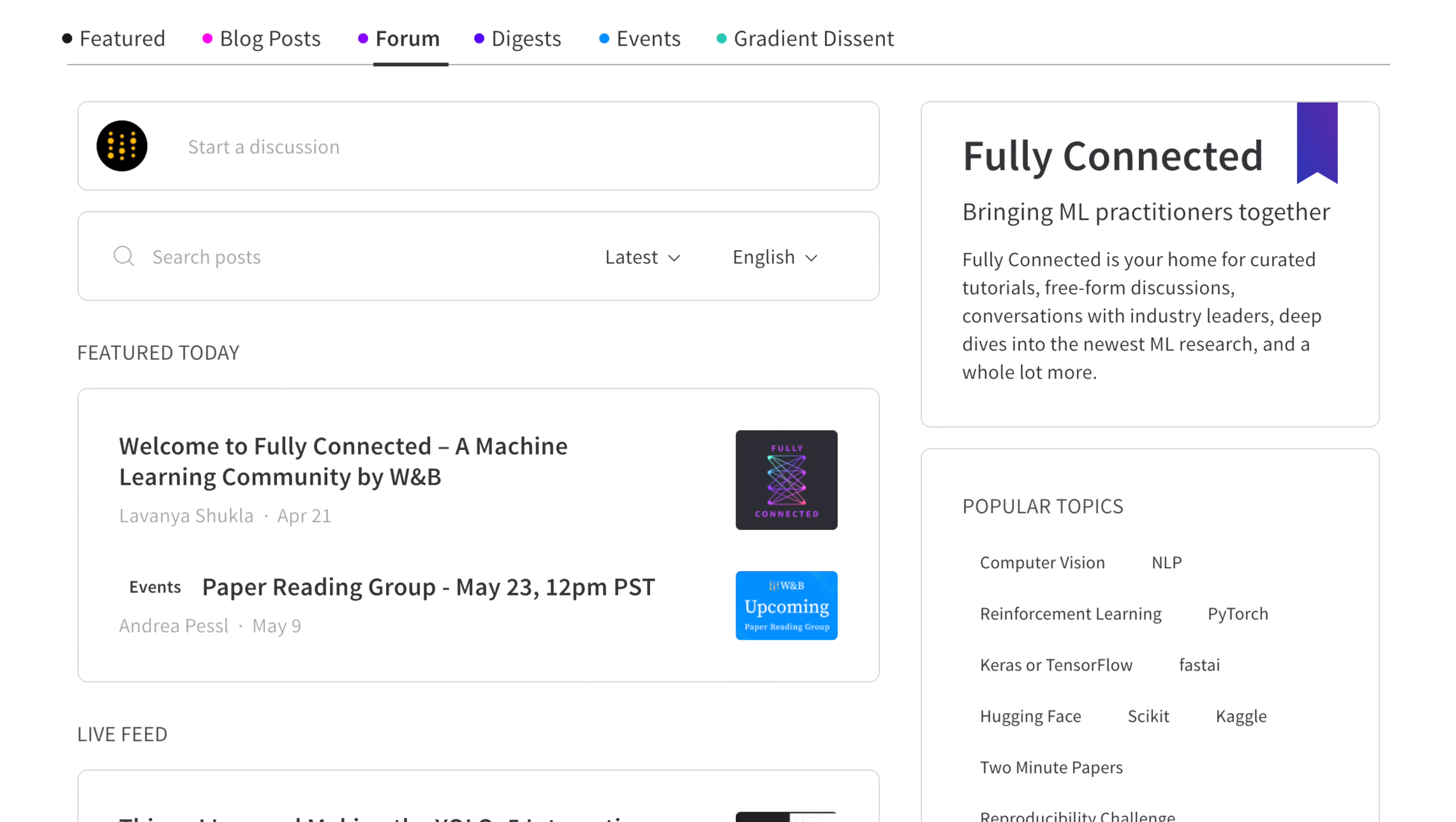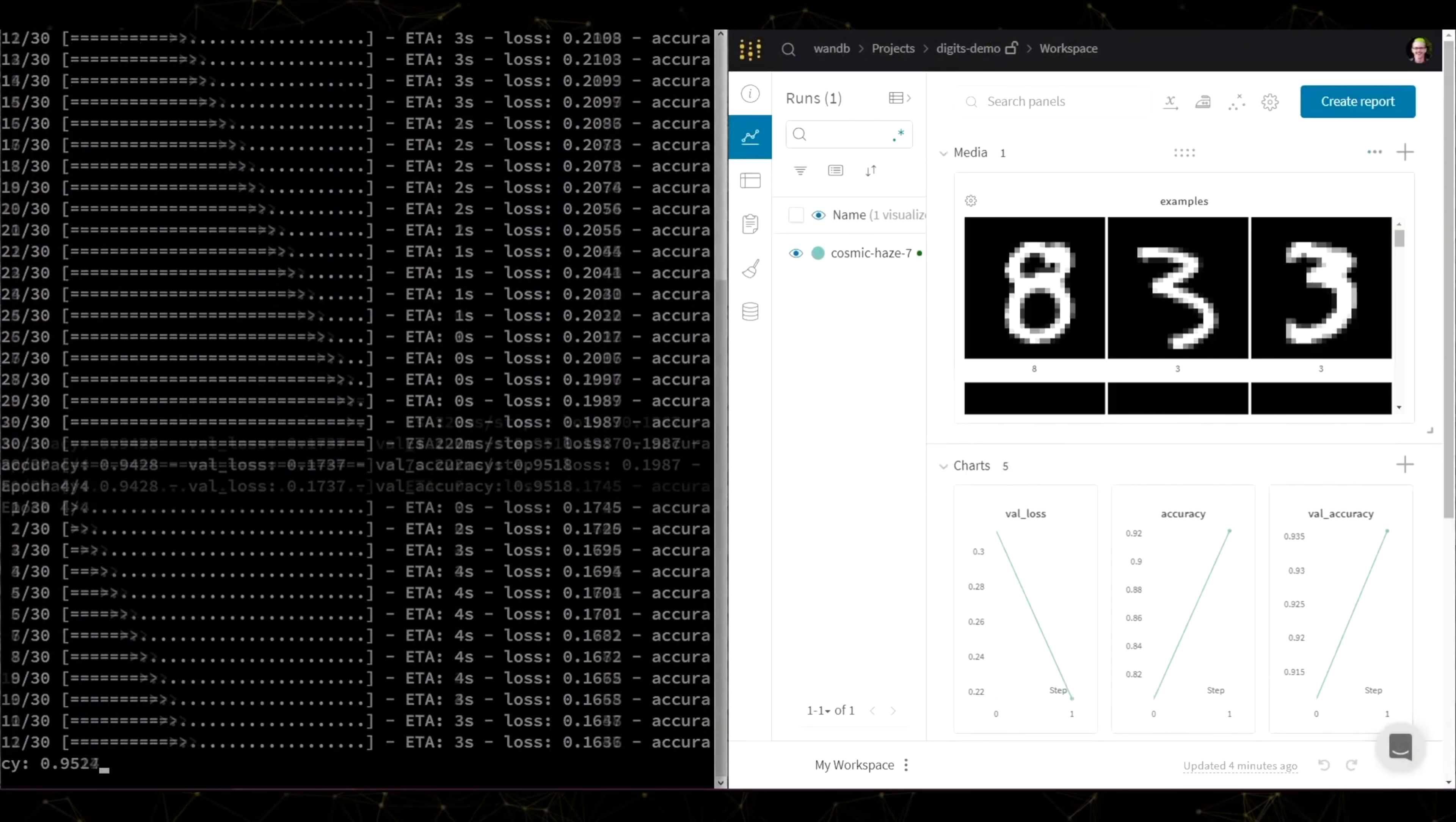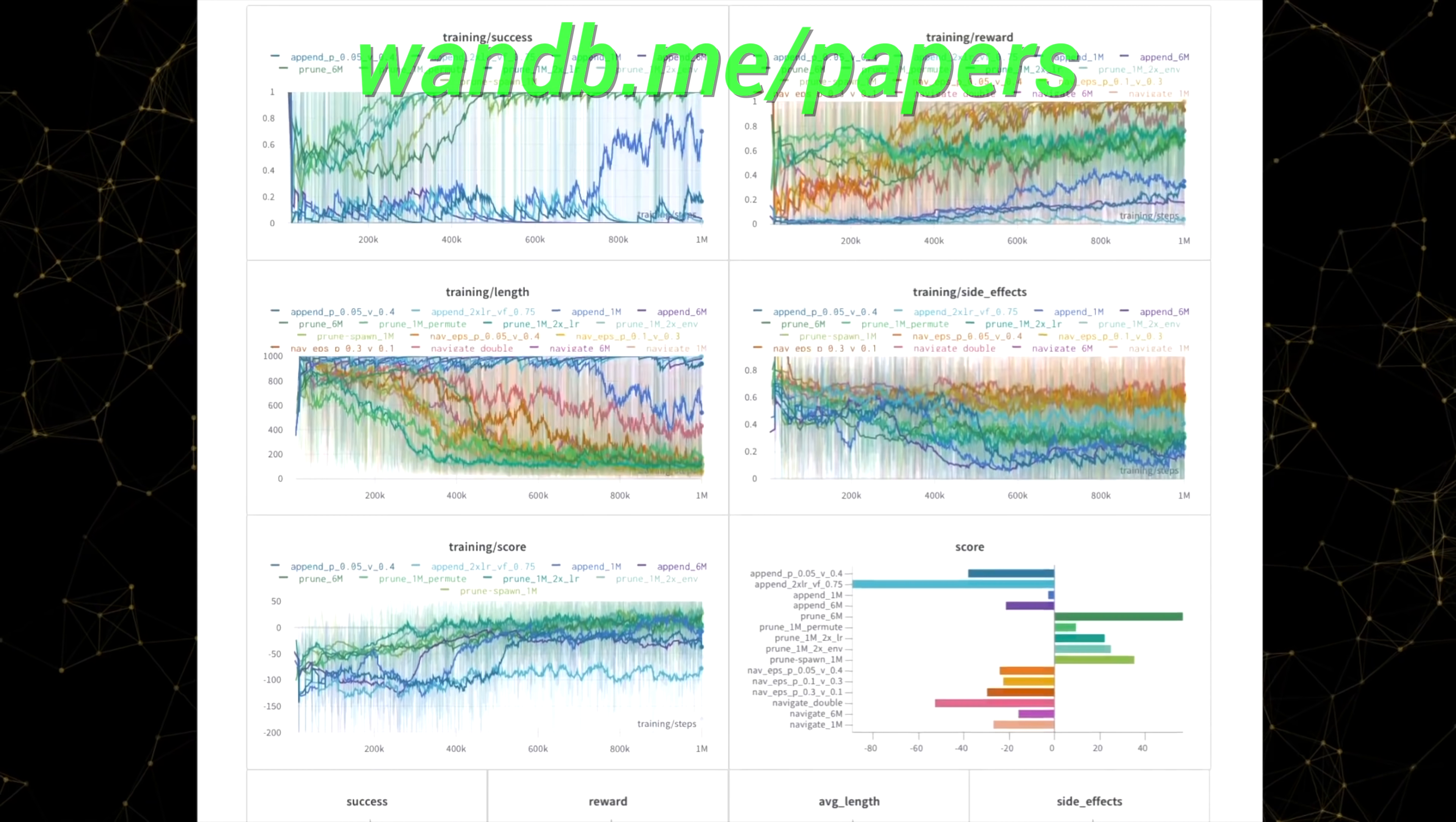This video has been supported by Weights and Biases. Check out their recent offering Fully Connected, a place where they bring machine learning practitioners together to share and discuss their ideas, learn from industry leaders, and even collaborate on projects together. You see, I get messages from you fellow scholars telling me that you have been inspired by the series, but don't really know where to start. And here it is! Fully Connected is a great way to learn about the fundamentals, how to reproduce experiments, get your papers accepted to a conference, and more. Make sure to visit them through wnb.me/papers or just click the link in the video description. Our thanks to Weights and Biases for their longstanding support, and for helping us make better videos for you. Thanks for watching and for your generous support, and I'll see you next time!